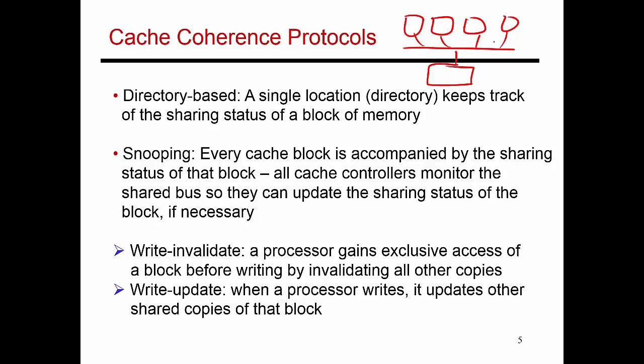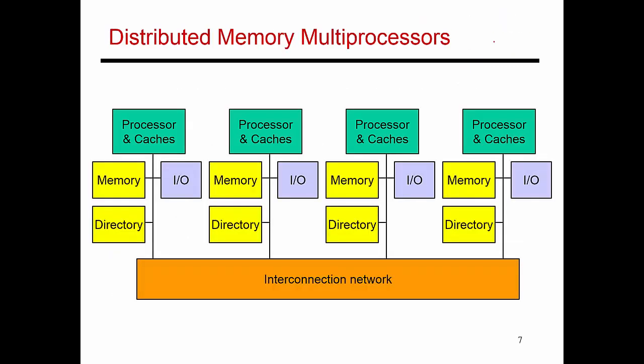Usually, when you're trying to design a large-scale multiprocessor system, you want to move away from using a shared bus or a centralized resource. Let me show you an example of that kind of design style first, and once I've shown that, I will show you how to implement a directory-based cache coherence protocol on this kind of multiprocessor system.